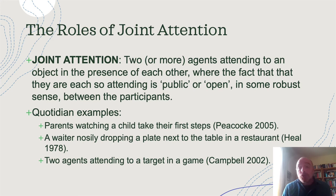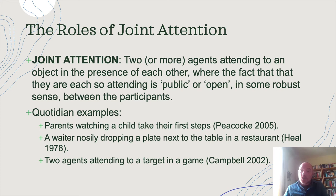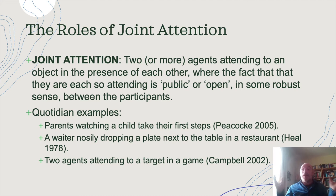Here are some quotidian examples from the literature. Christopher Peacocke has an example of two parents watching a child take their first steps — they're both sitting there and it's transparent between them what's happening. Jane Heal has an example of a clumsy waiter in a restaurant coming towards the table who then drops the plates, and the two people at the table are jointly aware of what's happened. She contrasts that with a situation where one person drops food in their lap and is unsure whether the other has seen — that's not open, there's uncertainty about what each other knows.